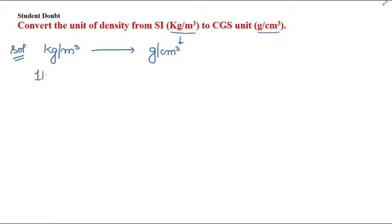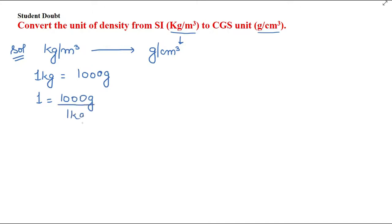First, 1 kg equals 1000 grams. So here we will apply dimensional analysis unit factor formulation. The kg is in the numerator, so we will take kg in the denominator to cancel them together. So the unit factor will be: 1000 gram / 1 kg. This is our first equation.